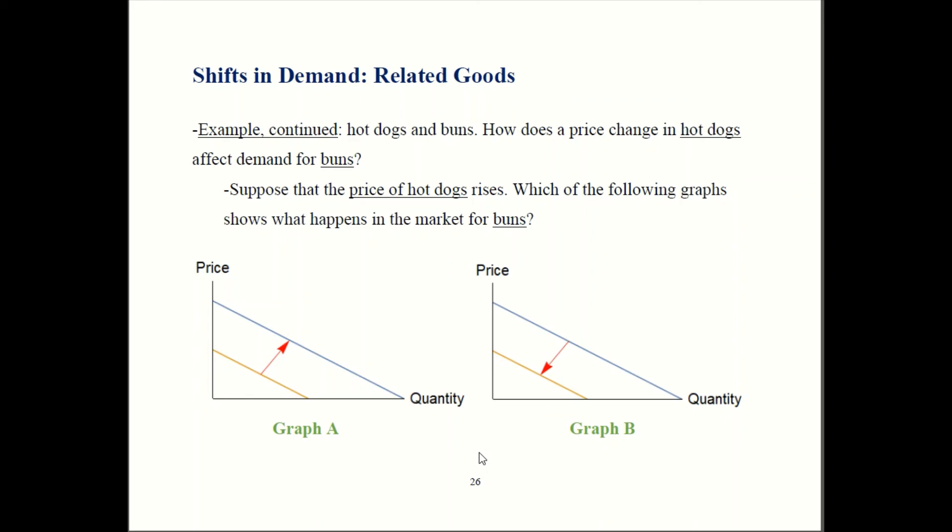As a result, demand for buns is going to shift back. So which graph looks like shifting back? Well in graph A, we're buying more buns, so that's not making sense. Graph B, we're buying fewer buns, so that means demand is shifting back. That is going to be the right answer.